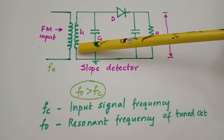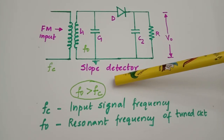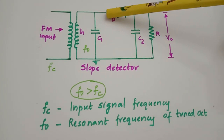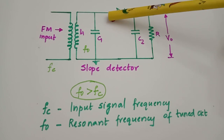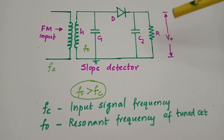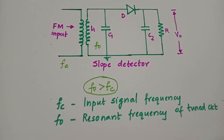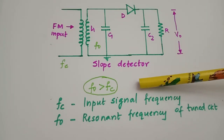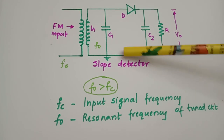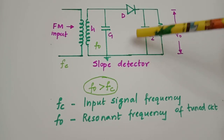The resonant frequency of the frequency selective network or tank circuit is chosen to be greater than the incoming carrier signal frequency. The output obtained from the frequency selective network is a mixture of AM and FM, which is fed to the simple diode detector, giving the modulating signal at the output. By fixing F0 greater than FC, we tune the slope detector to receive signals on the slope of the response curve of the tuned circuit, which is why we call this circuit a slope detector.